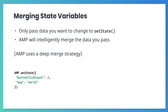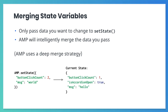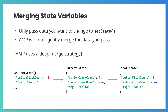The sample code on screen shows an example of how AMP merges state variables. First, we use amp.setState to signal the intent to set state variables buttonClickCount and message. The current state variables are buttonClickCount, isAccordionOpen, and message. The result of the merge is that buttonClickCount and message's values changed, and isAccordionOpen remains unchanged.